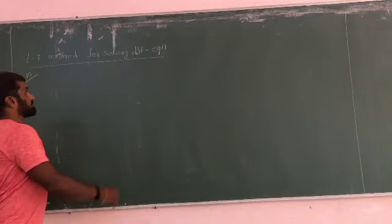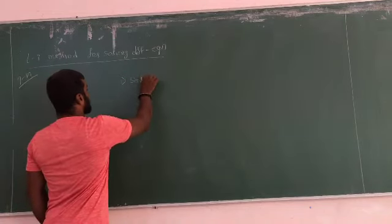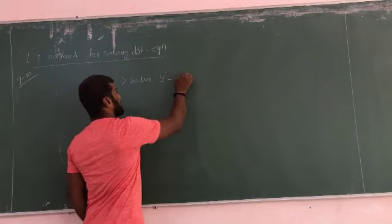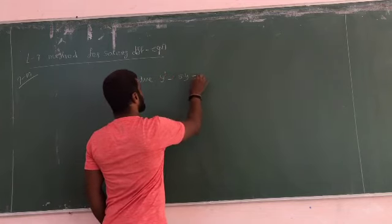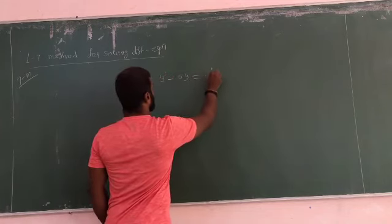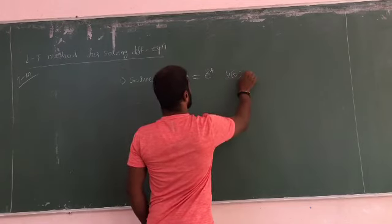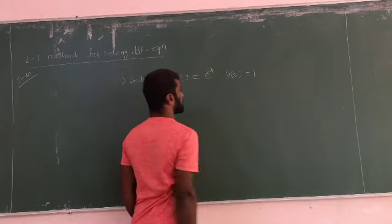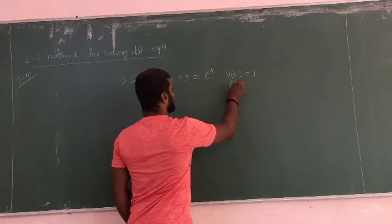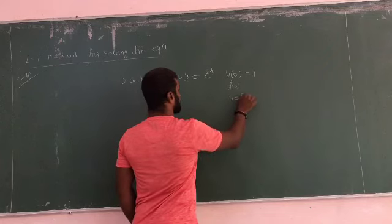Before the procedure, here is another important question. Solve: y''(x) minus 5y' equals e^(2t), with initial conditions y(0) equal to 1, and y'(0) equal to 0.